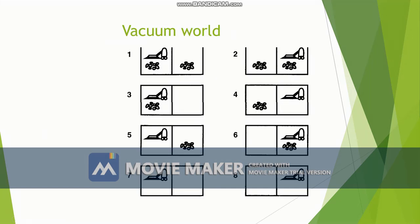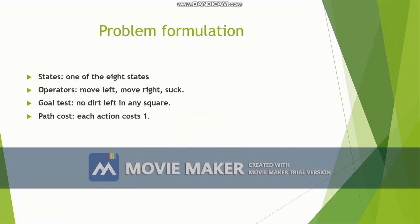The next problem is the vacuum world problem, which was explained in previous videos. There are two rooms, and dirt may be present in any one room, both rooms, or neither room. A vacuum cleaner may be present in any one of the rooms, giving a total of eight possible states. The initial state is any one of these eight states.